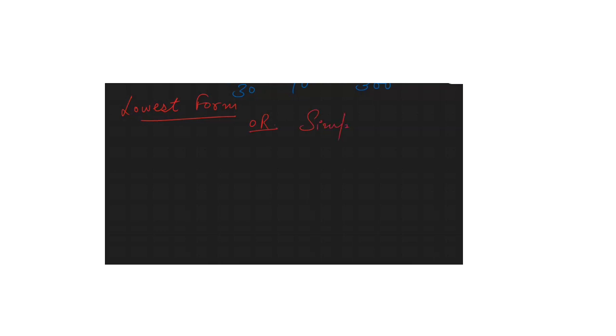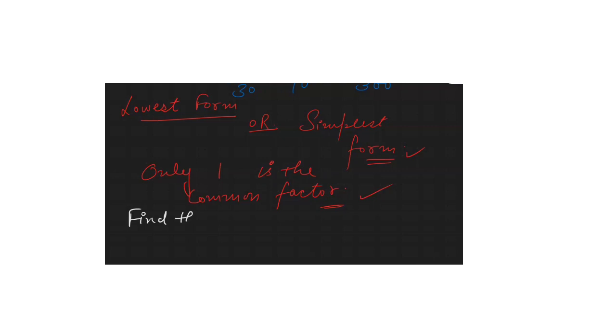Next topic: lowest form or simplest form. A fraction is in its lowest form if the only common factor between the numerator and the denominator is 1. To find it, suppose we need to find the lowest term of 9/15.